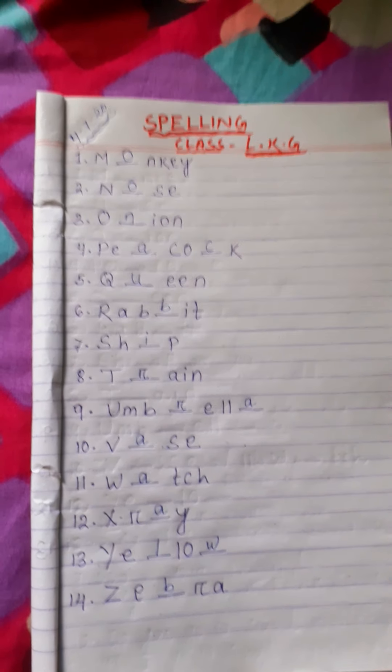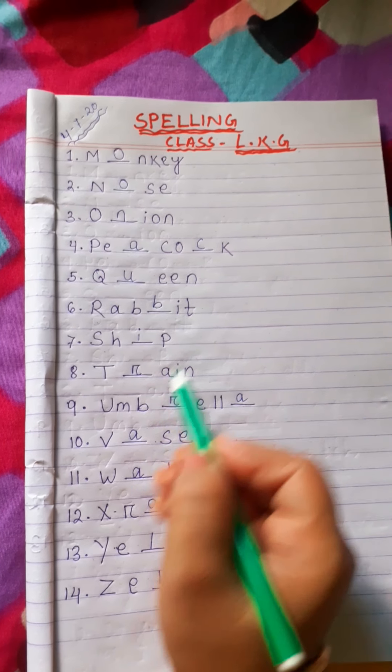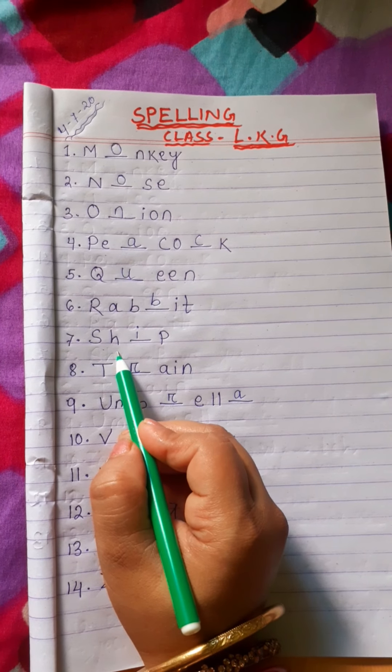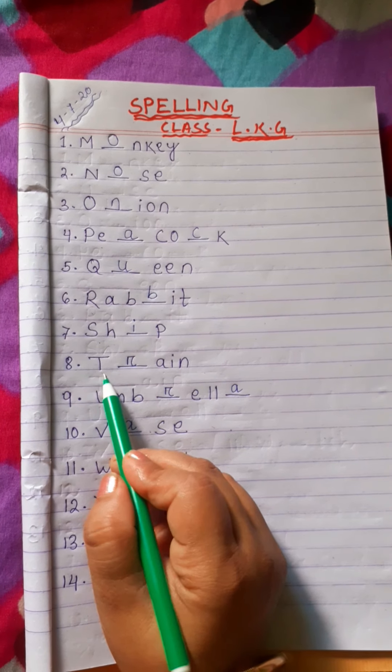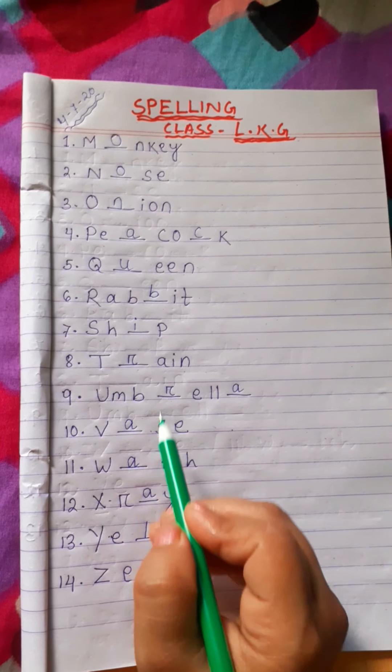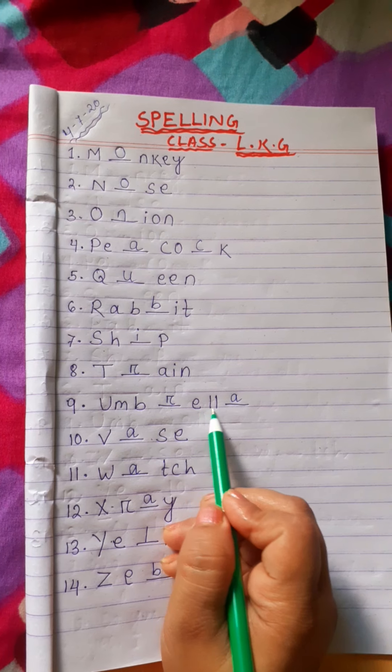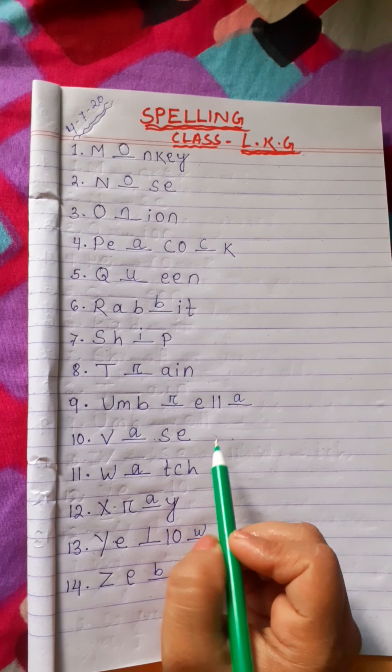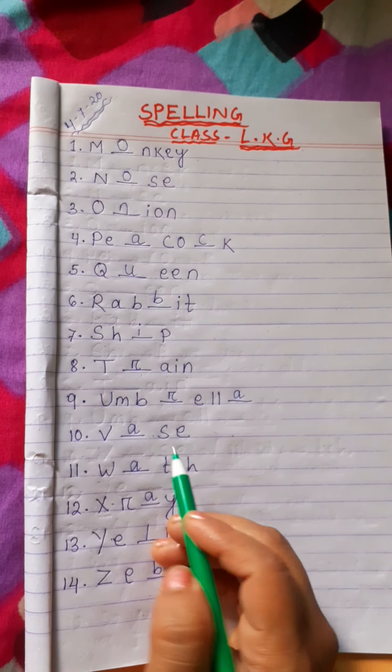R, A, B, B, I, T, Rabbit. S, H, I, P, Ship. T, R, A, I, N, Train. U, M, B, R, E, L, L, A, Umbrella. V, A, S, E, Vase.